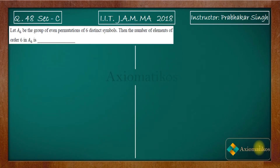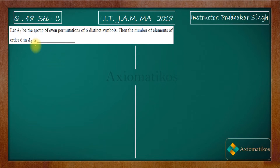Hello dear students, welcome to ExeoMatic course. This video is part of the solution series for IIT JAM 2018, and we are doing problem 48 of section C. This problem is from abstract algebra. Let A6 be the group of even permutations of six distinct symbols. We have to find the number of elements of order six in A6.